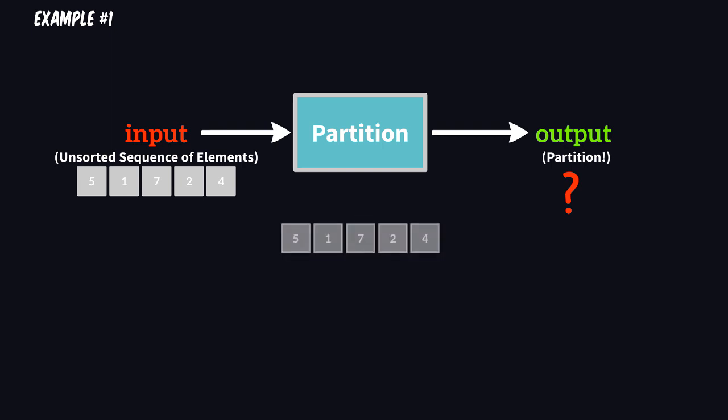So step number one, get your collection of elements. Step number two, choose your pivot. Pick an element, the pivot. For now we'll pick the pivot as the first element, the leftmost one.